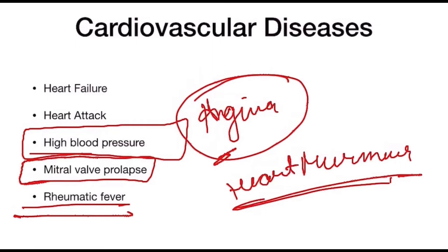Regarding coronary artery bypass graft, angioplasty, or stent procedures — one of the more common cardiovascular surgeries is coronary artery bypass grafting, also known as CABG. The grafted artery bypasses the occluded portion of the artery, and these patients do not require antibiotic prophylaxis. Another method of restoring patency is balloon catheter angioplasty. After placement of stents, patients are often prescribed one or more antiplatelet agents, which decrease the risk of blood clots associated with stents but therefore increase the risk of bleeding during surgical procedures. These patients must be evaluated accordingly.